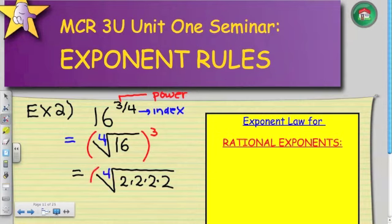So the fourth root of 16 is obviously 2, and we have to take that number 2, and make it to the power of 3. 2 times 2 is 4, times 2 is 8, and my final answer is 8.